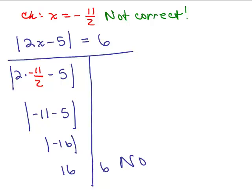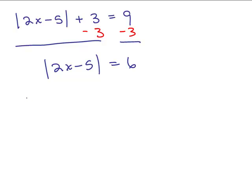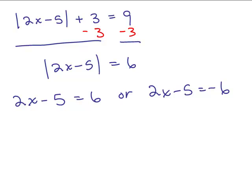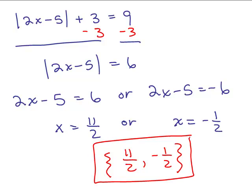Let's do one more example. First, isolate the absolute value to get the absolute value of 2x minus 5 equals 6. Then break it into two equations since the right side is positive: 2x minus 5 equals 6 or 2x minus 5 equals negative 6. Solving both gives x equals 11 halves or x equals negative 1 half. You should check both of these in the original absolute value equation. Go on to the next video and we'll work on more problems and examples.